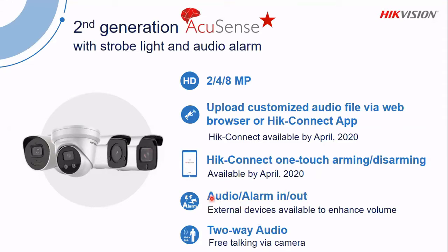Audio and alarm input and output are available, and there's two-way audio. Because it's got audio, you can have a two-way audio conversation with whoever is near the camera. There's two-way audio built in — you can actually hear what's being said close to the camera, and from your app you can talk back to the camera and say, hey, I'm watching you.